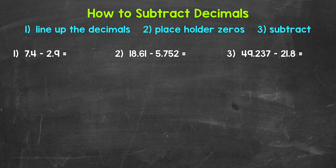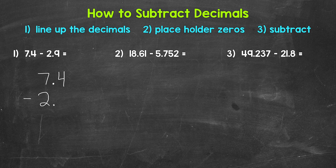Let's jump into number one, where we have seven and four tenths minus two and nine tenths. The first thing that we need to do when we have a subtraction problem involving decimals is to line up the decimals. So we have seven and four tenths minus two and nine tenths, and those decimals are lined up, which lines up all of the places — in this case, the ones place and the tenths place.